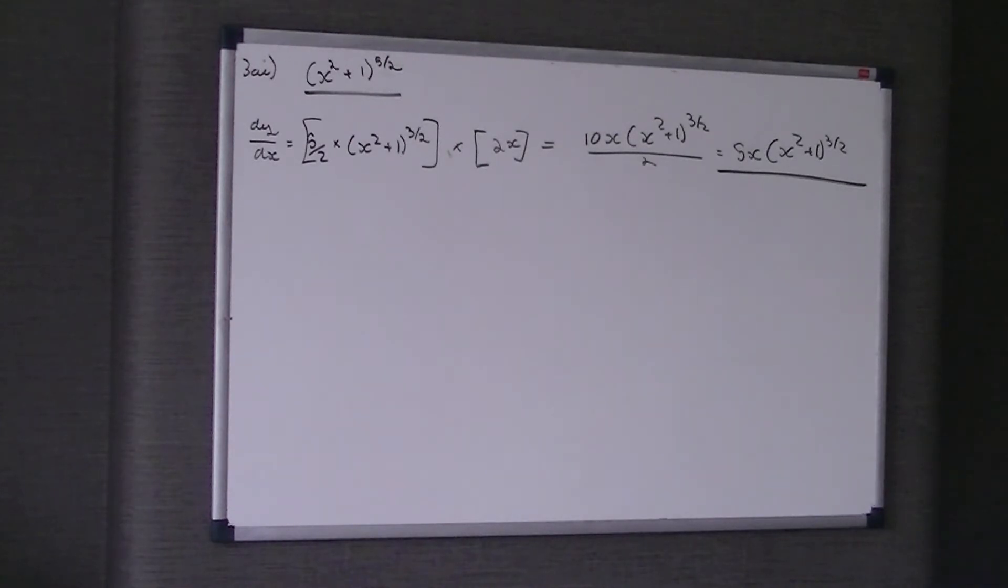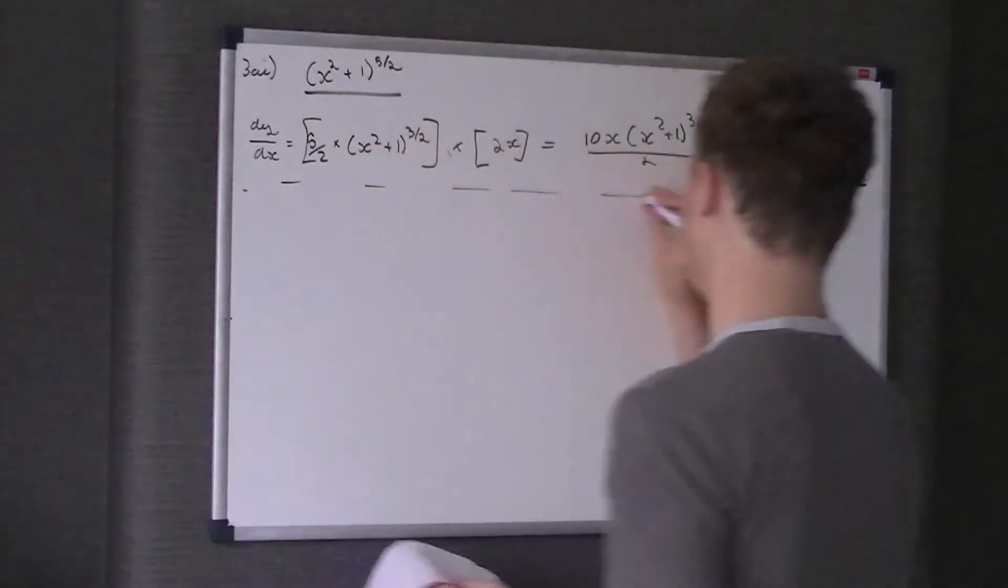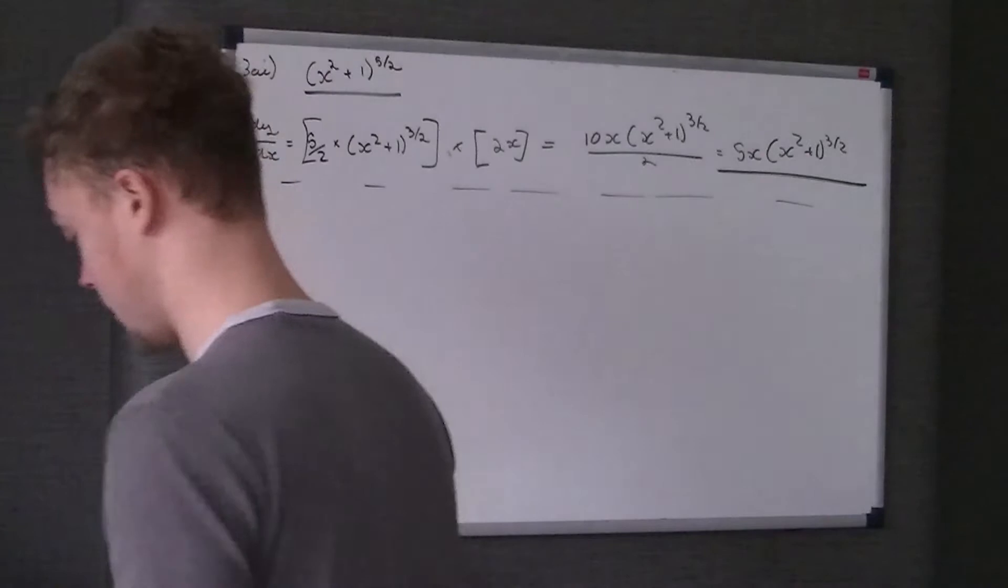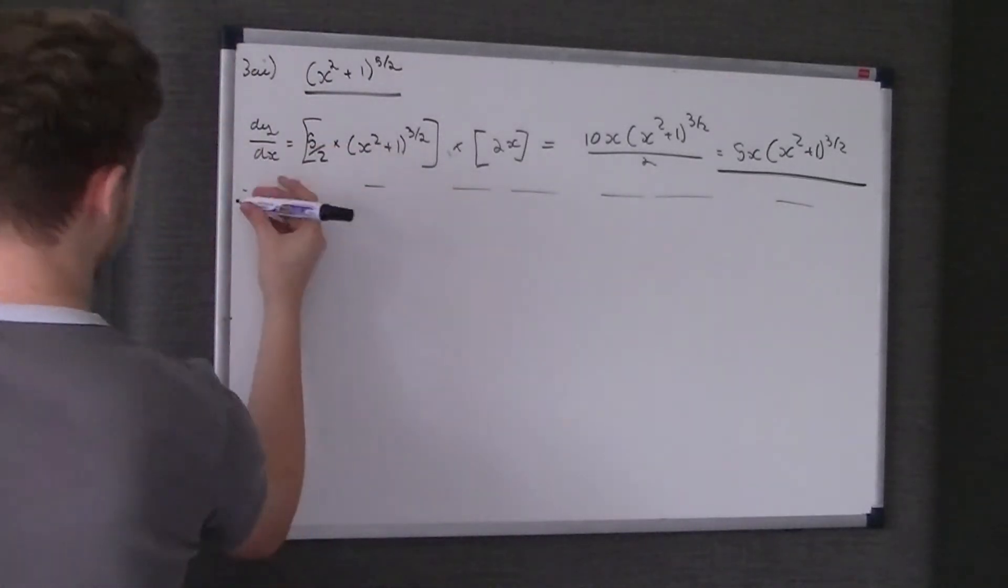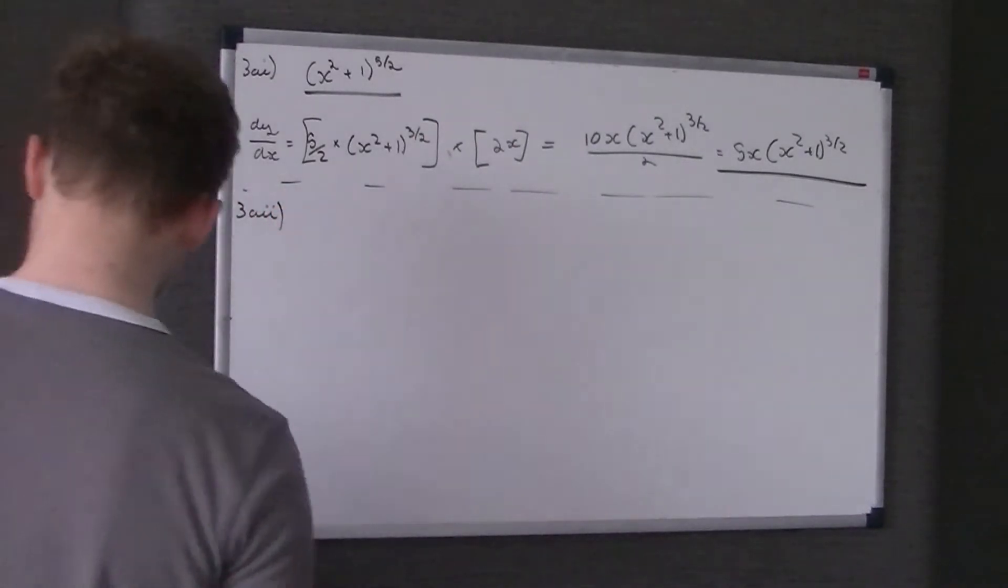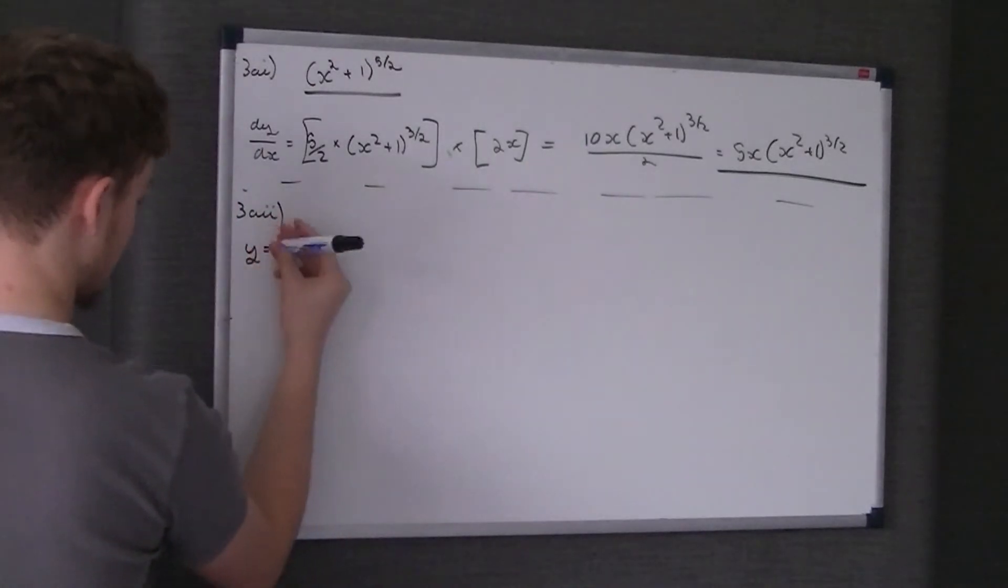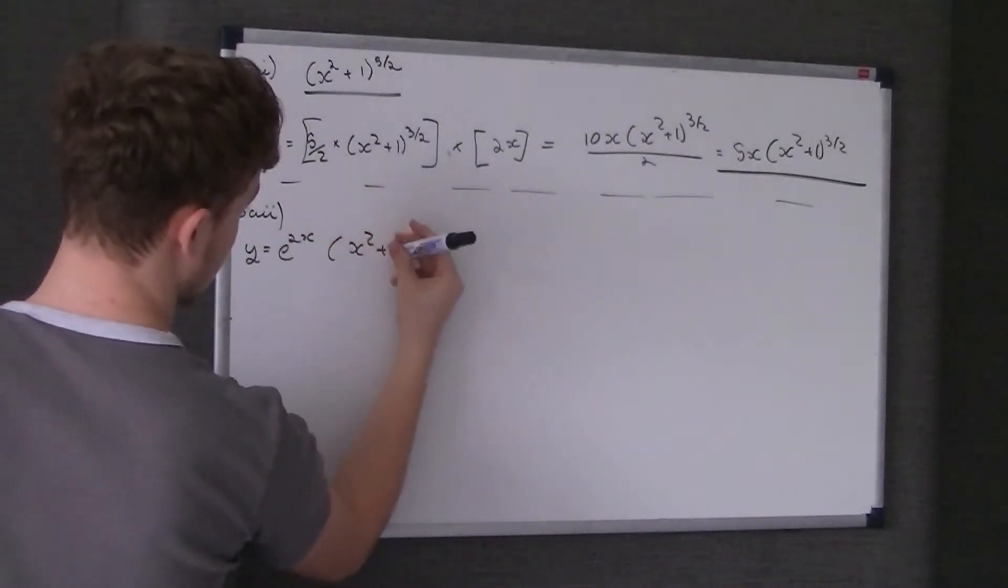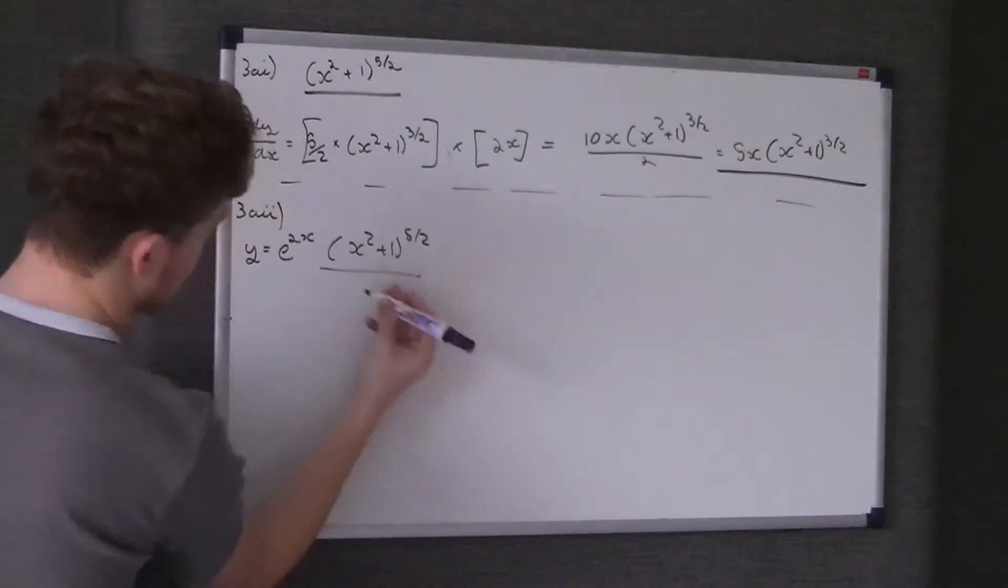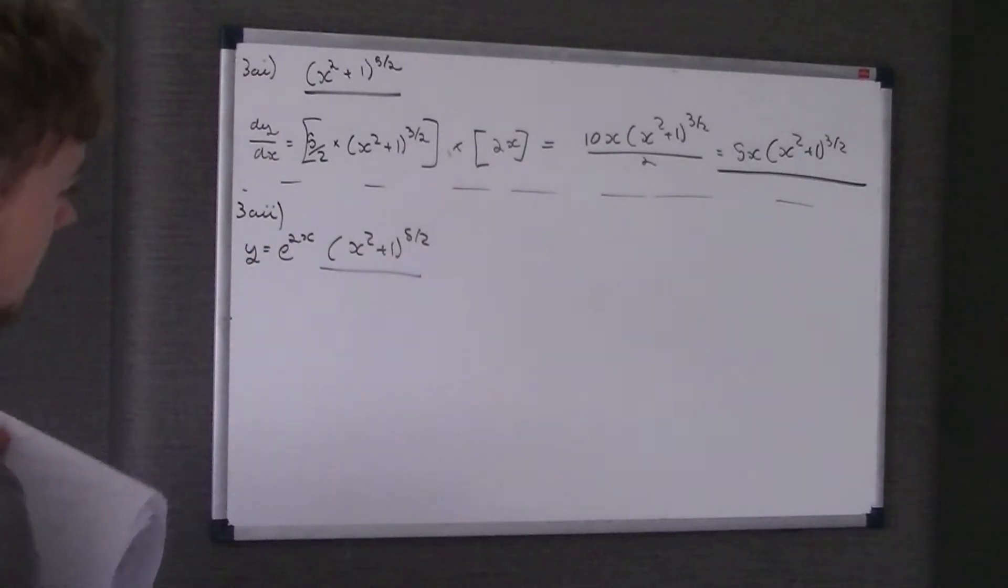We're going to be using that, because generally they wouldn't ask you a question just out of the blue unless it's related to something else. The next question says we're given y = e^(2x)(x² + 1)^(5/2). We're asked to differentiate this.